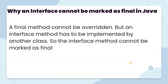Why can an interface not be marked as final? A final method cannot be overridden. But an interface method has to be implemented by another class, so an interface method cannot be marked as final.